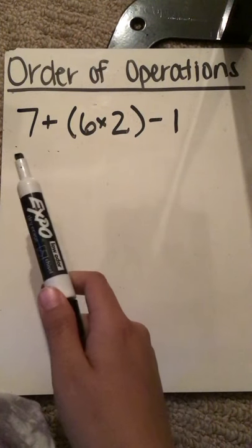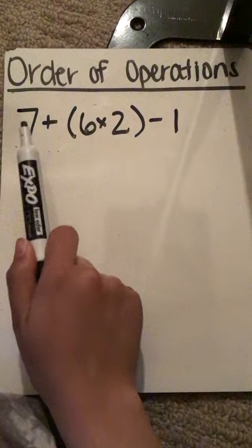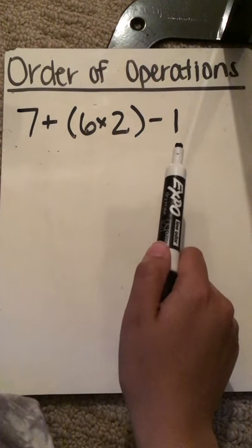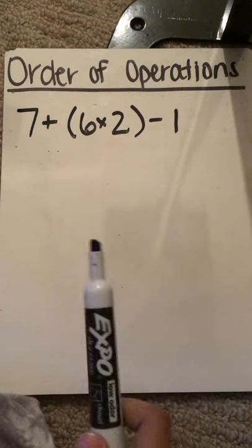So if we look at this right away, I might think, okay, I'm going to do seven plus six and divide that by two and then subtract one. That's actually not how we're going to do it.